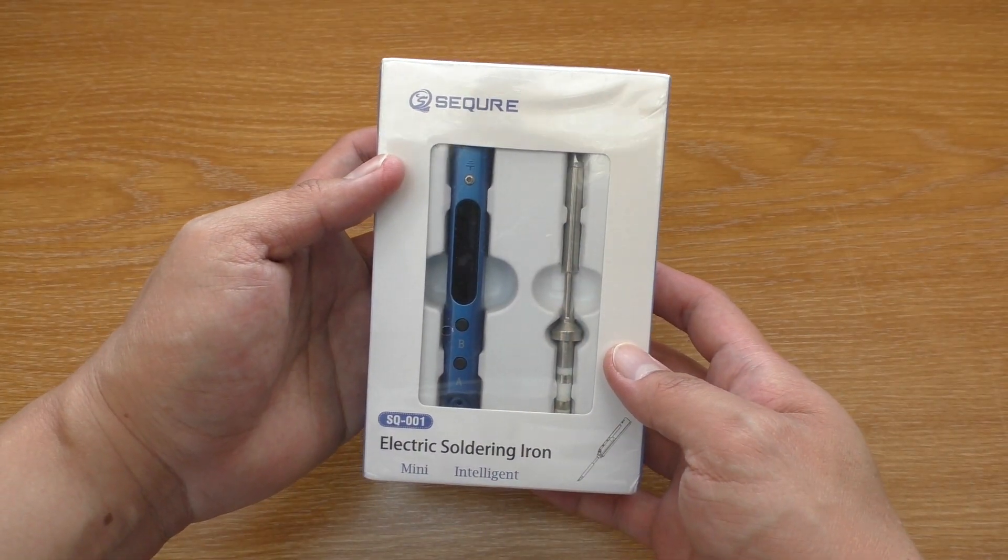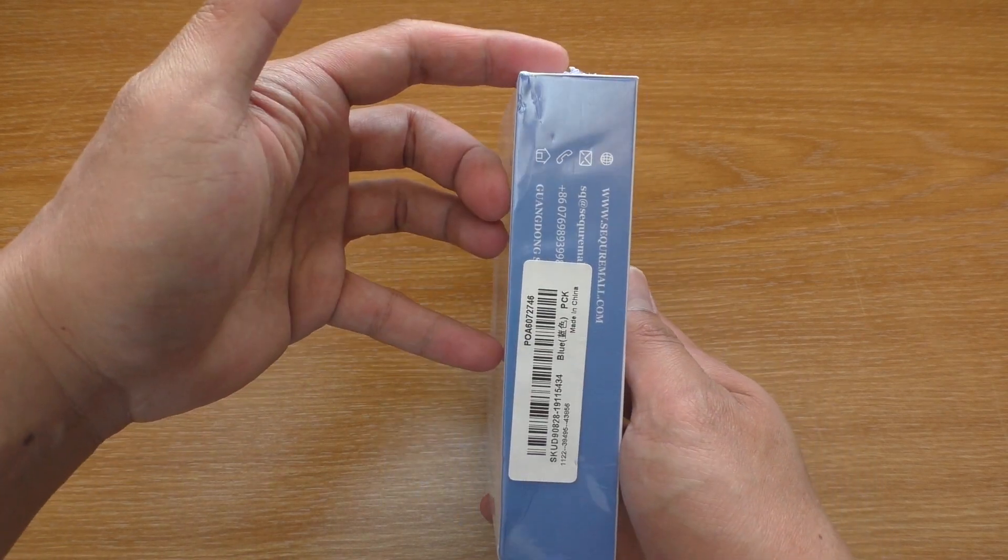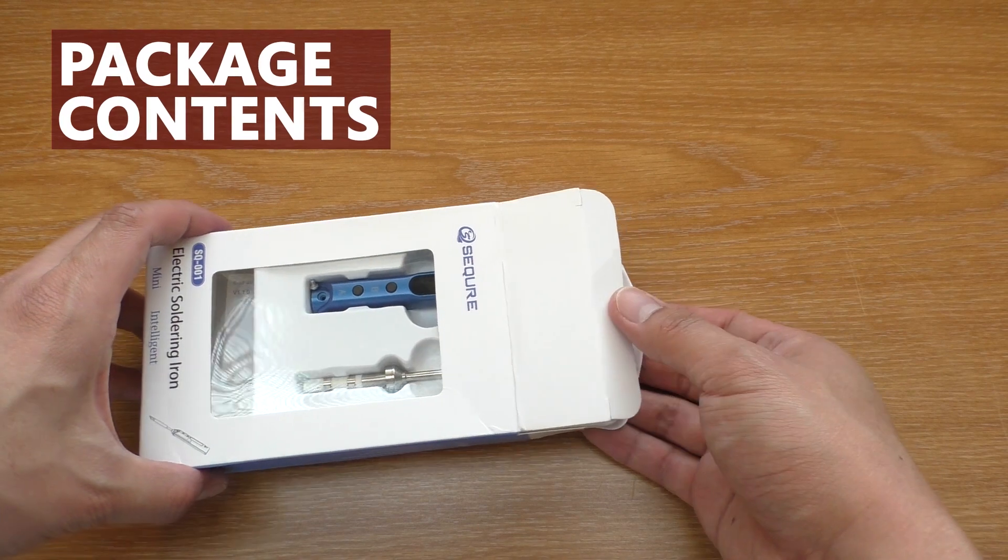Banggood has sent me this Flip Sky SQ001. It is actually another variation of the TS-100 which is a very good iron. Now let's open it up.